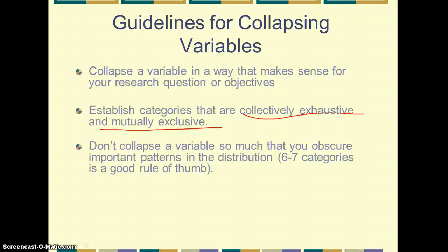We want to try to establish categories that are, of course, collectively exhaustive and mutually exclusive to make sure that we are not overlapping and that we are considering all of the possible options. We don't want to collapse the variables so much that we obscure important patterns in the distribution. For example, five, six, seven categories, if you're going to collapse them like that, is a good rule of thumb. And then we want to use culturally defined categories as much as possible. That's usually culturally defined by the culture of the researcher as well as the culture of the participants in the research.